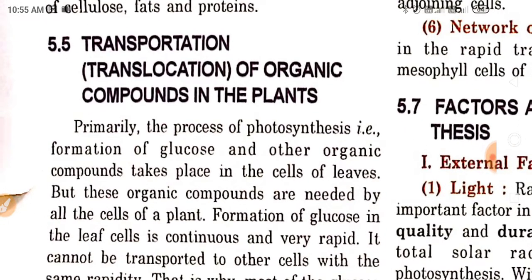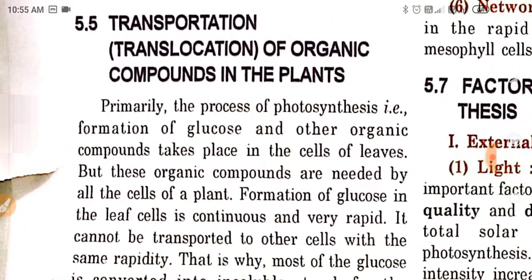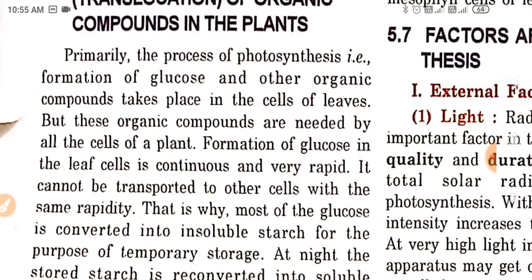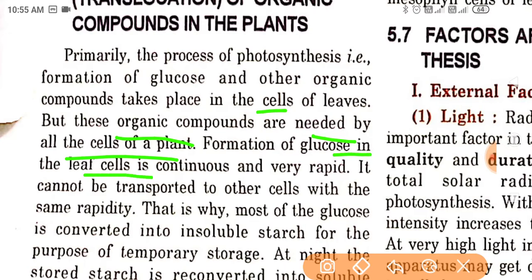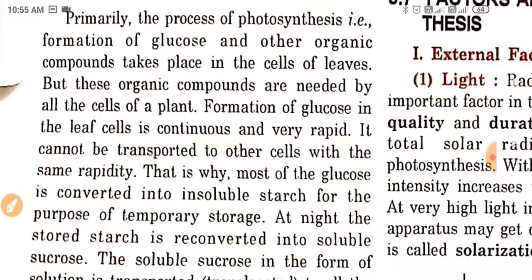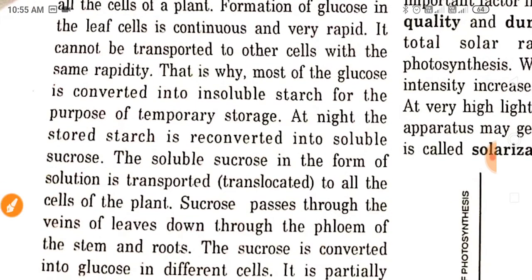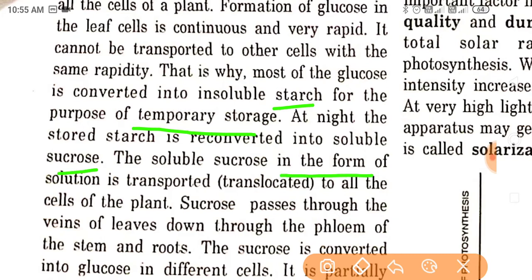Next is transportation or translocation of organic compounds in plants. Primarily, the process of photosynthesis — that is, formation of glucose and other organic compounds — takes place in the cells of leaves. But these organic compounds are needed by all cells of a plant. Formation of glucose in the leaf cells is continuous and very rapid, but it cannot be transported to other cells with the same rapidity. That is why most of the glucose is converted into insoluble starch for the purpose of temporary storage. At night, the stored starch is reconverted into soluble sucrose, which is then transported or translocated to all the cells of the plant.